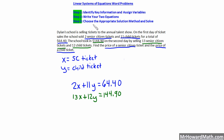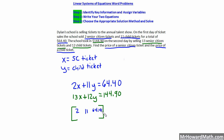Step three: choose the appropriate solution method and solve. We've already decided we're going to use matrix today. So let's draw what our matrix should look like in our calculator. We'll use a two-by-three matrix. In the first row from equation one: 2, 11, and 64.40. The next row from equation two will be: 13, 12, and 144.90.